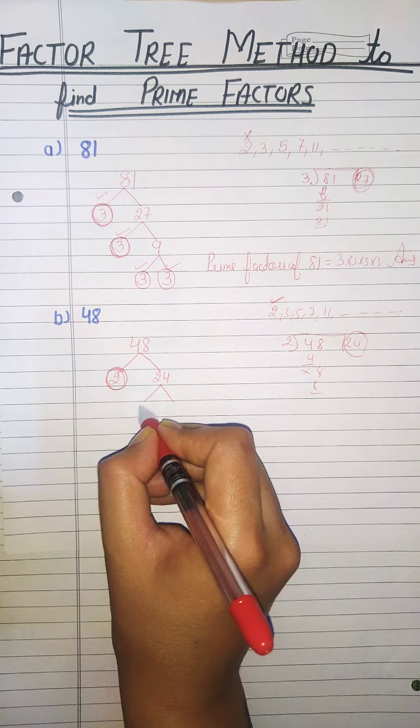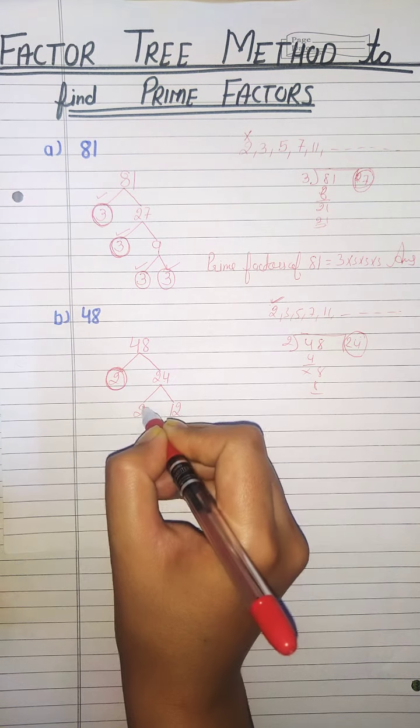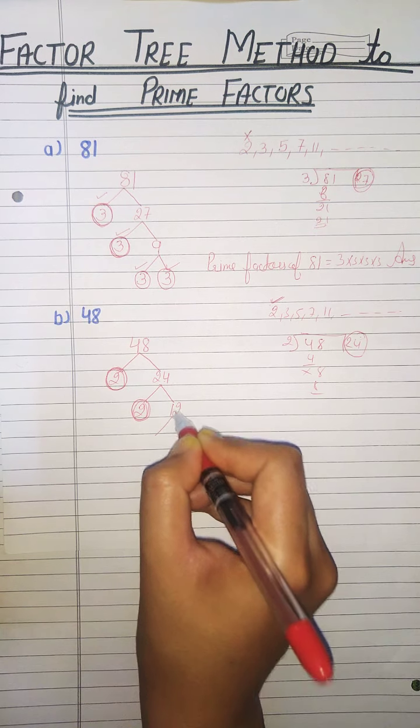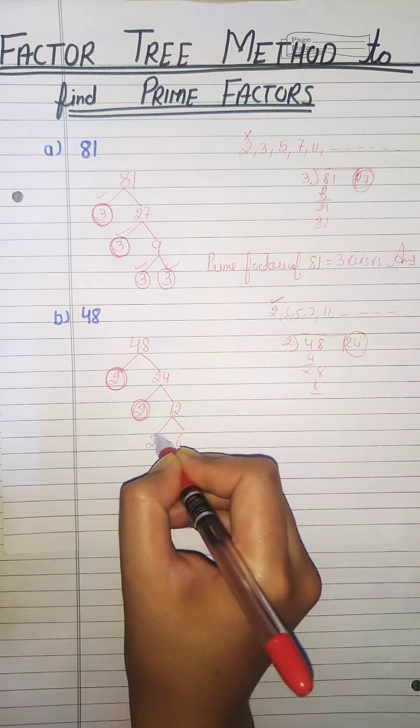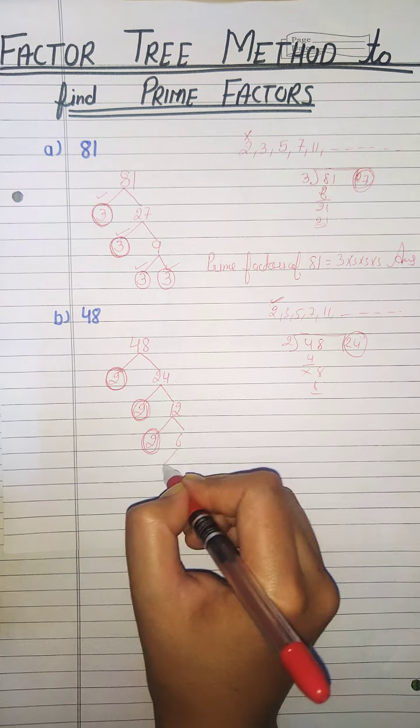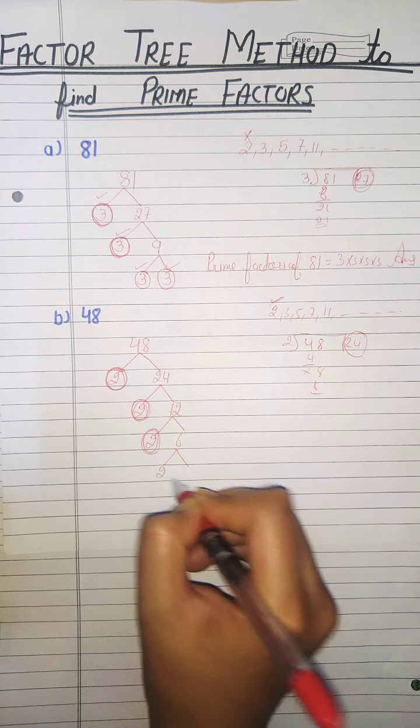24 is again divisible by 2. 2 times 12. 2 is a prime number. Split 12 into 2 times 6. 2 is a prime number. 6 is 2 times 3.